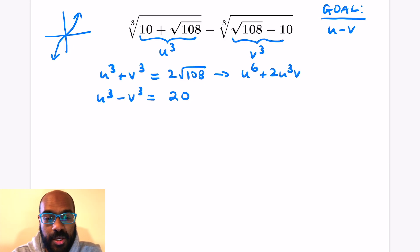We're gonna square u cubed plus v cubed. If we do that we get u to the sixth plus 2u cubed v cubed plus v to the sixth, and that's going to give us 432. Squaring the bottom expression we get u to the sixth minus 2u cubed v cubed plus v to the sixth is 400.